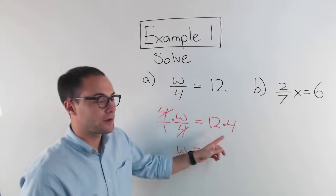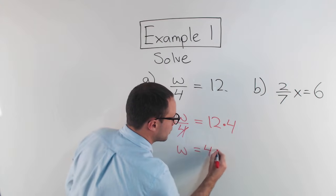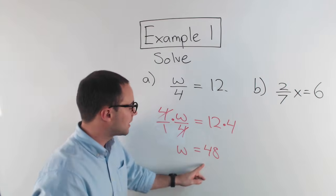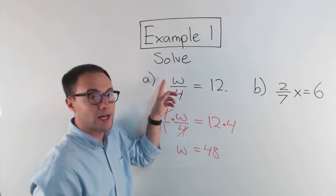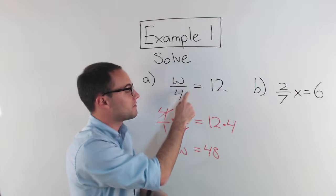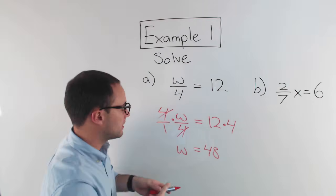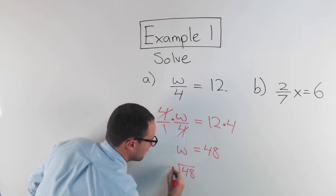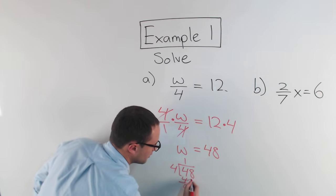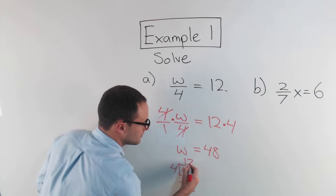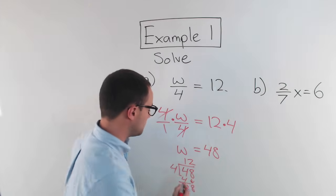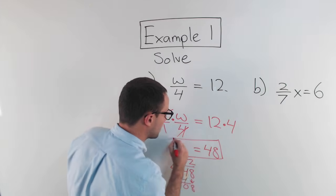So w equals 12 times 4, which is 48. Before I box that answer, I can always check by substituting it back in. If w is equal to 48, let's check: 48 divided by 4. 4 into 48 — 4 into 4 goes once, subtract, bring down the 8, 4 into 8 is 2. So 48 divided by 4 is 12. That is our solution.